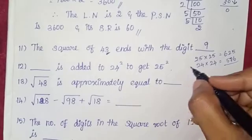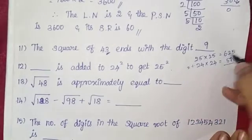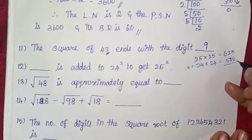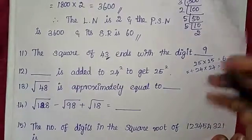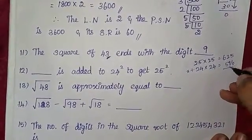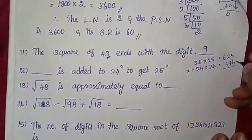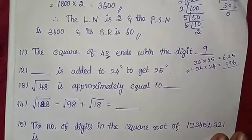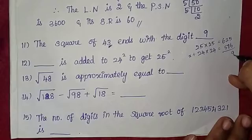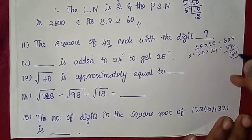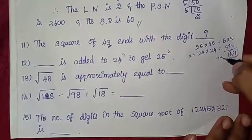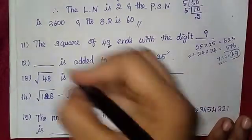Now subtract 576 from 625. The difference is 49. So 49 is added to 24 squared to get 25 squared. The answer is 49.